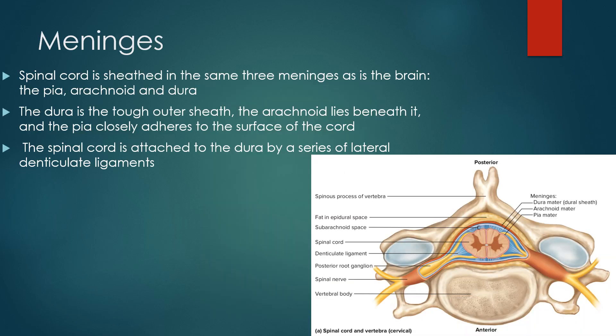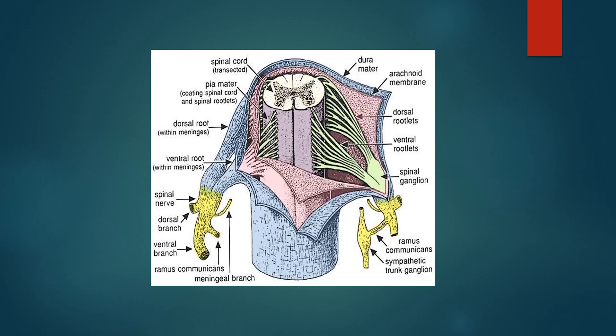The spinal cord is sheathed in the same three meninges as the brain: the pia mater, arachnoid, and dura mater. The dura is the tough outer sheath, the arachnoid lies beneath it, and the pia closely encases the spinal cord. The spinal cord is attached to the dura by a series of lateral denticulate ligaments, which are actually folds of the pia mater that help to anchor the cord. The nerve fascicles that form the spinal nerves must pierce through all layers of the meninges, so that eventually the dura and the epineurium of the spinal nerves merge.